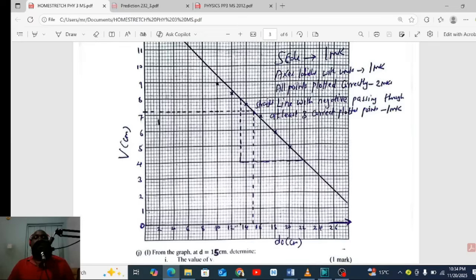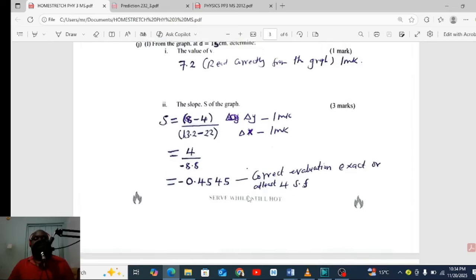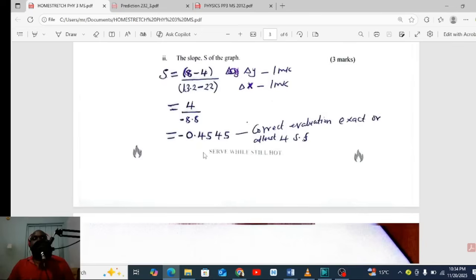Where we are, at 15, where you meet the curve, draw a tangent. So our gradient is going to be negative 0.4545 correct to four significant figures, then we are okay.